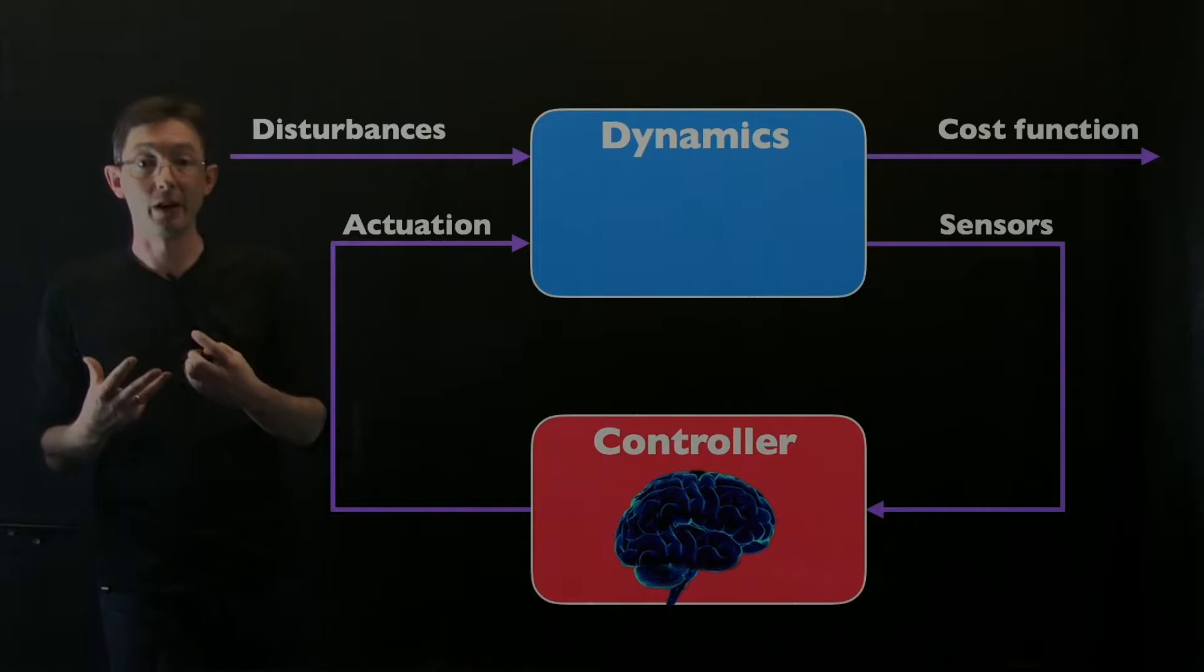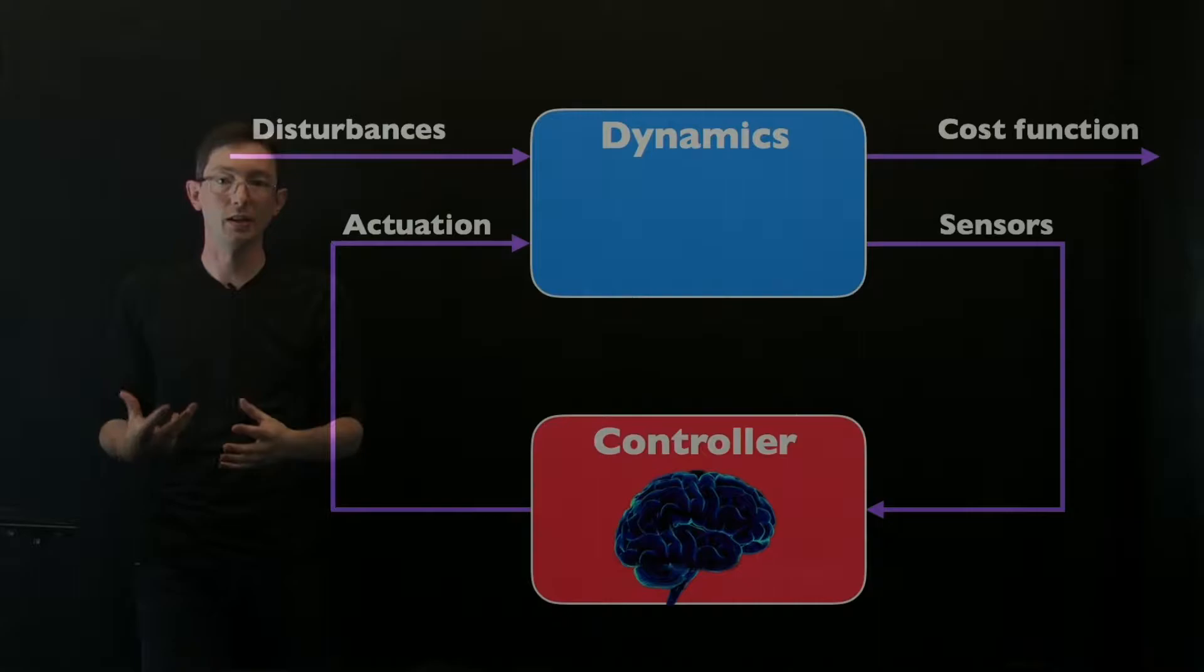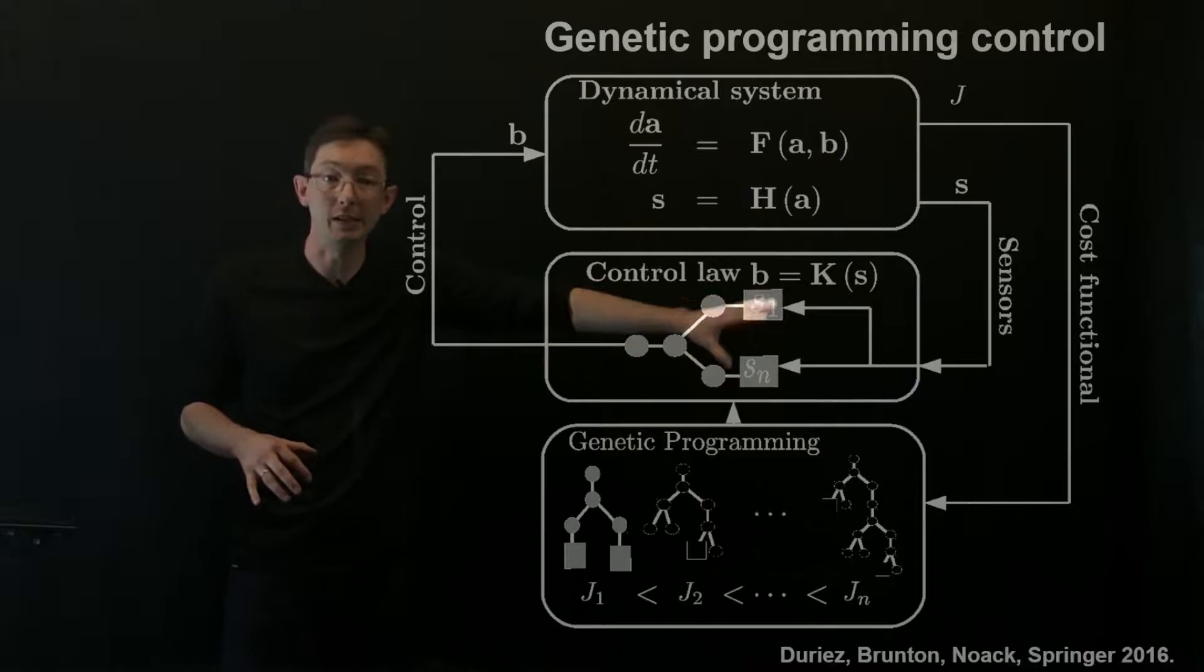We've talked about how we can use genetic programming, which is essentially this recursive function tree representation, to iteratively design better and better control law trees to control some unknown black box dynamical system.